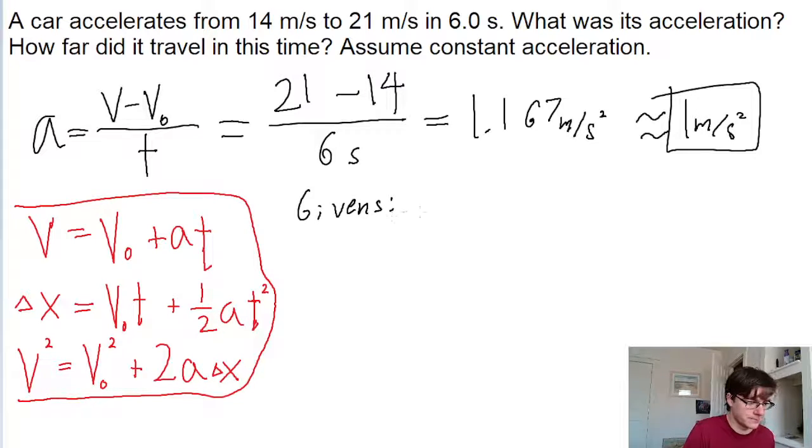We're given the initial speed, the final speed, the time interval, and we know the acceleration as we just found in the previous part of the problem. The unknown variable we're trying to find is delta x.